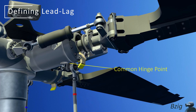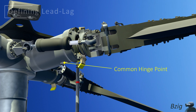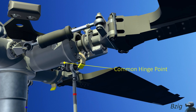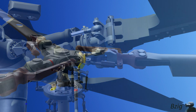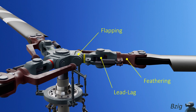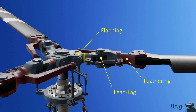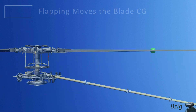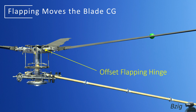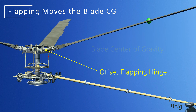For this particular rotor system, all three degrees of freedom, including lead lag, are hinged at the same point. There are other types of rotor systems where each degree of freedom has a separate hinge location. It's this offset hinge that creates the need for lead lag motion. And as explained in a previous video, this offset flapping motion is needed to control the helicopter.